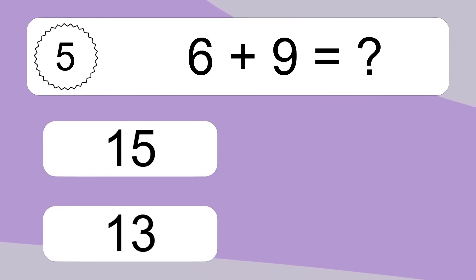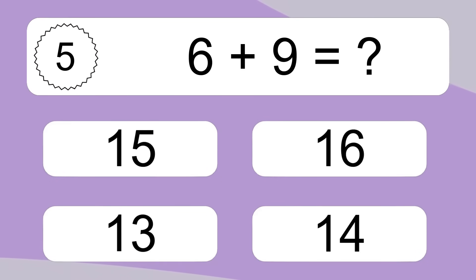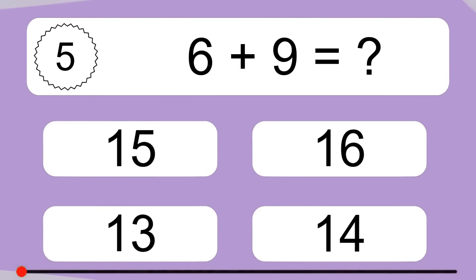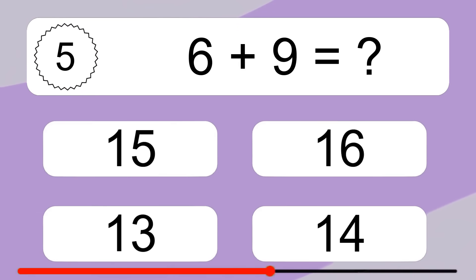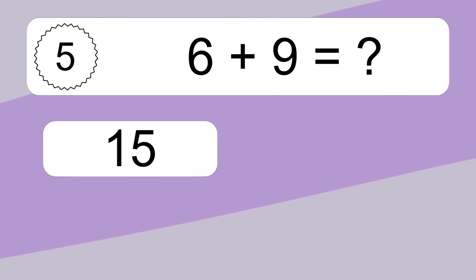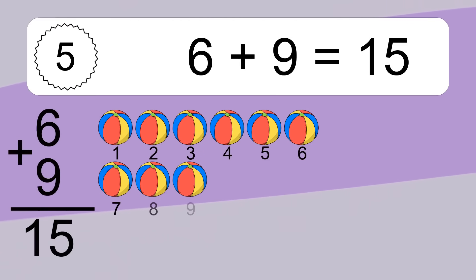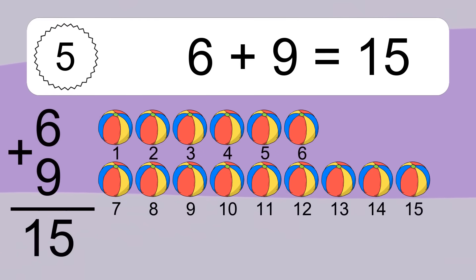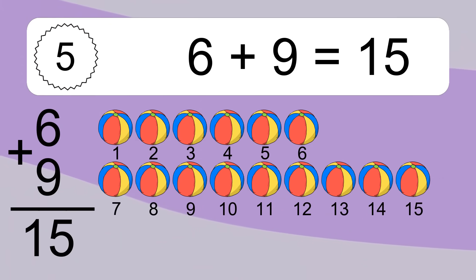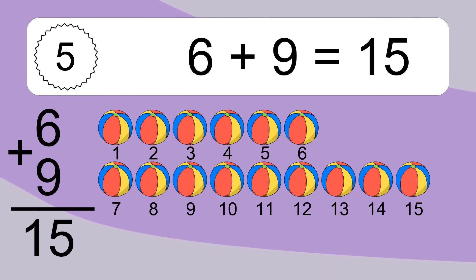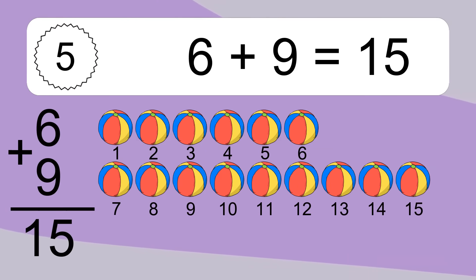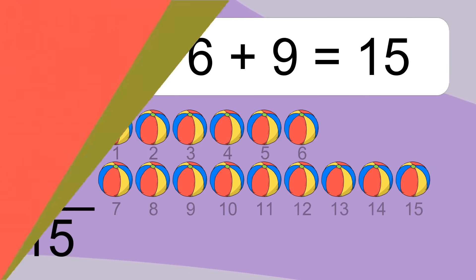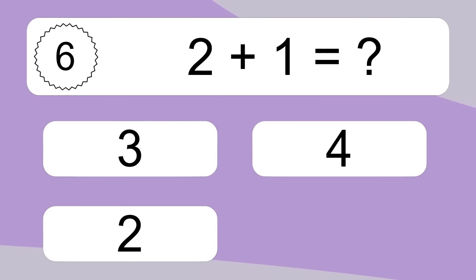6 plus 9 equals what? 6 plus 9 equals 15. Let's count it: 1, 2, 3, 4, 5, 6, 7, 8, 9, 10, 11, 12, 13, 14, 15.